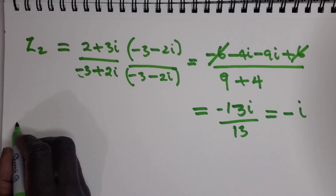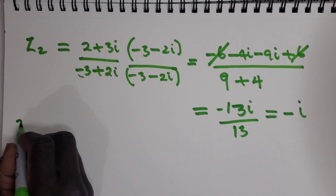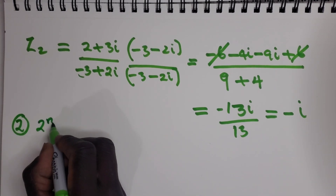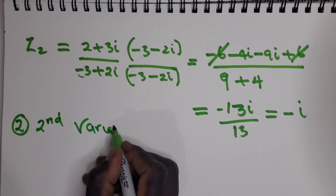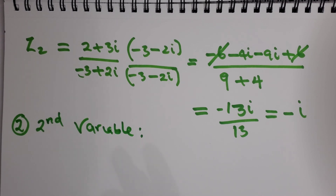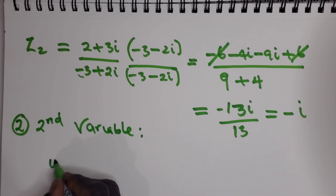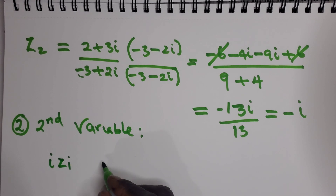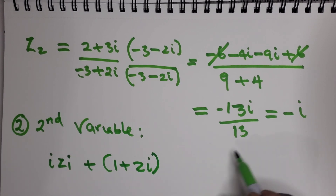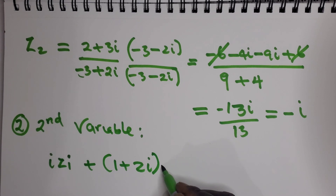Now for step two — solve for the other variable. Take one of the original equations and plug in the value we found. So we use: i times z1 plus one plus two i times z2, and we know z2 is negative i.